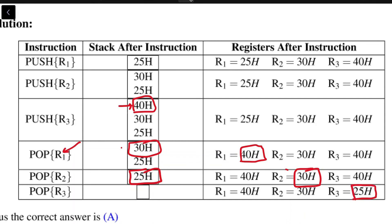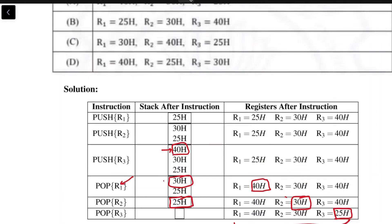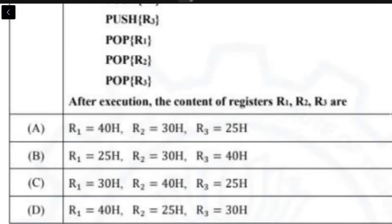So finally, the registers will have the value 40h, 30h, and 25h on r1, r2, and r3 respectively. This corresponds to option A, which is the correct option.